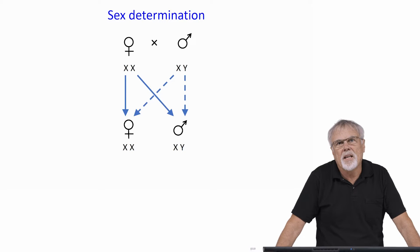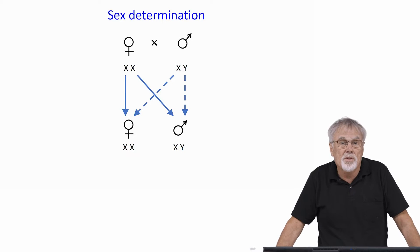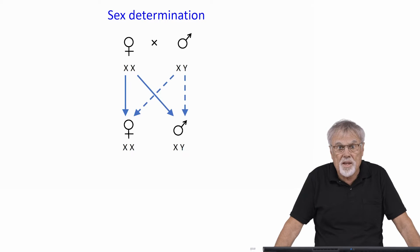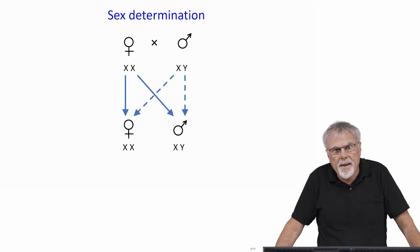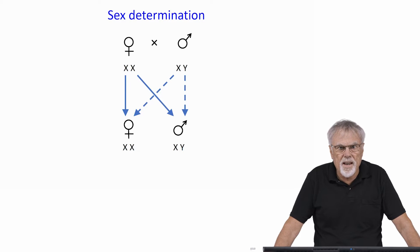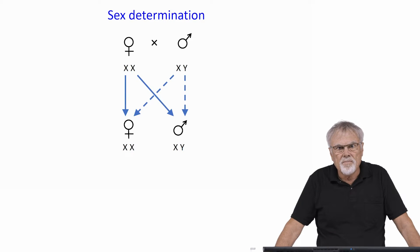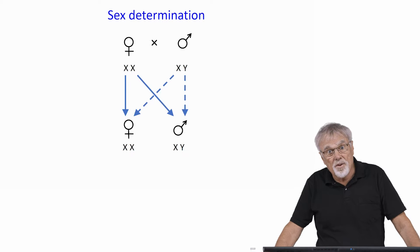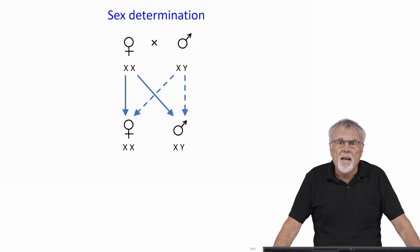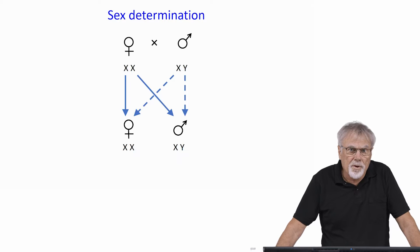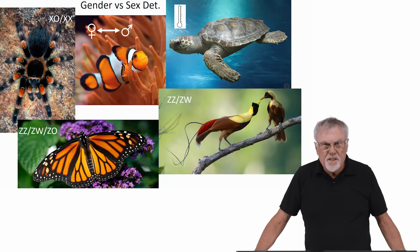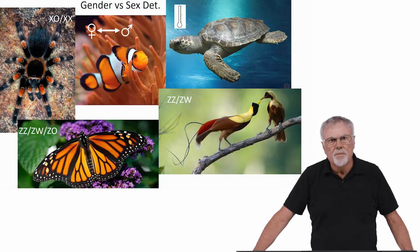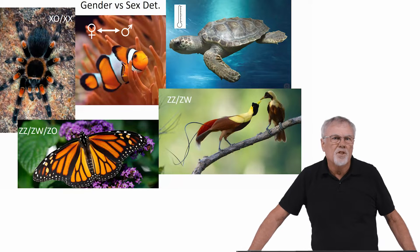We're all familiar with the mechanism of sex determination in humans. Females have two X chromosomes, males have an X and a Y. If you inherit an X chromosome from your mother and an X chromosome from your father, you're a female. However, if you inherit an X chromosome from your mother and a Y chromosome from your father, you're a male. Different sex determination systems determine gender in different species.